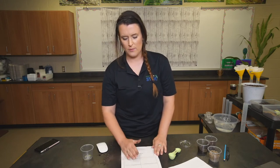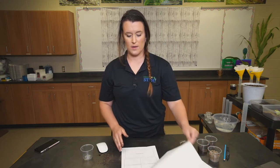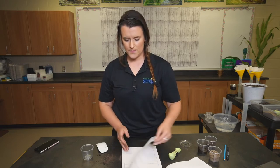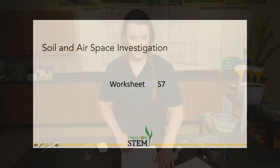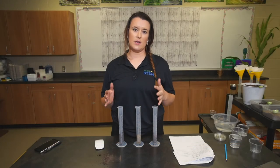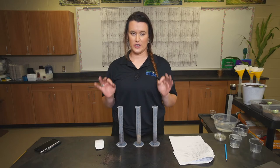Students will do that with both their local soil and their potting soil — the paper pages look the same, exact same process for both. Next, we're going to move on to the soil and airspace investigation. You're going to need page S7 in the student worksheets. It says 50 milliliter test tubes, but honestly, anything that can measure 50 milliliters works. I'm using graduated cylinders.